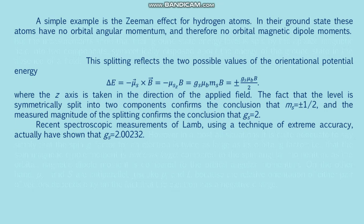On the other hand, μ_s and s are antiparallel, just like μ_L and L, because the relative orientation of this pair of vectors depends only on the fact that the electron has a negative charge.